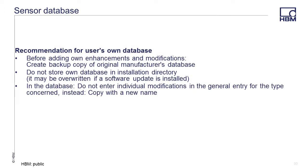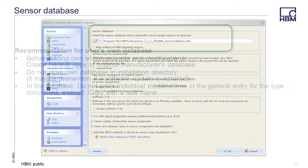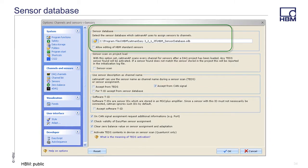Recommendations: before adding your own enhancements or modifications, create a backup copy of the original sensor database. Do not store the database in the installation directory, as it can be overwritten when a software update is installed. Do not enter individual modifications in the general entry for the type concerned — instead, copy with a new name. The sensor database used by CATMAN EZ is assigned in the CATMAN EZ options. The sensor database can be located on your PC or on a network location.